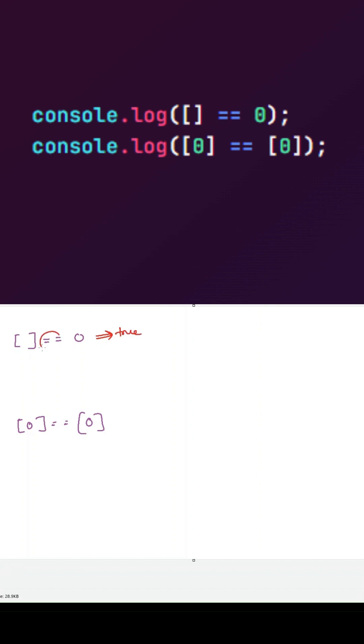Here we are using loose equal to operator between an array and a primitive data type. So whenever we use a loose equal to operator between an array and a primitive data type, JavaScript will try to convert this array into a primitive data type by using dot toString method.